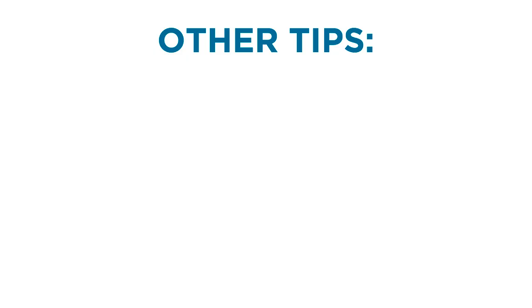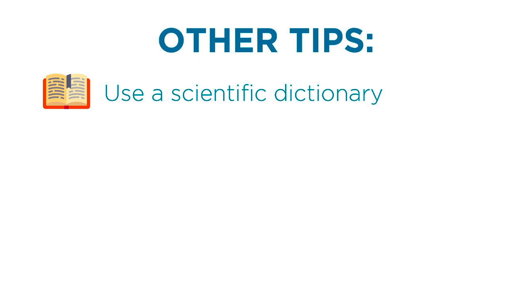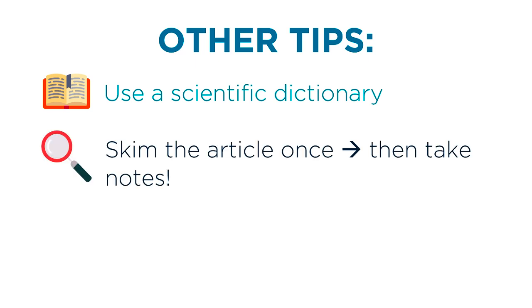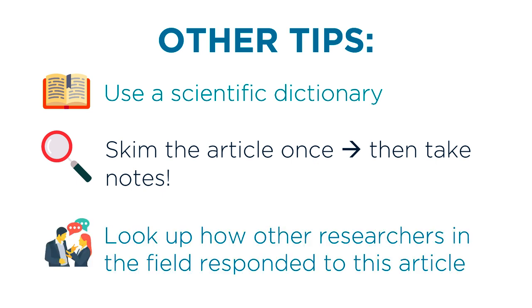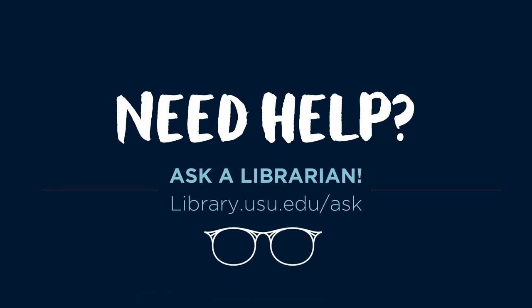Other helpful tips for reading scientific articles include: having a scientific dictionary ready to look up terminology you are unfamiliar with; skimming the article once, then going back through and doing a thorough read, taking notes this time; and then looking up what other researchers in the field have to say about this study. Remember, if you need help, you can always ask a librarian.